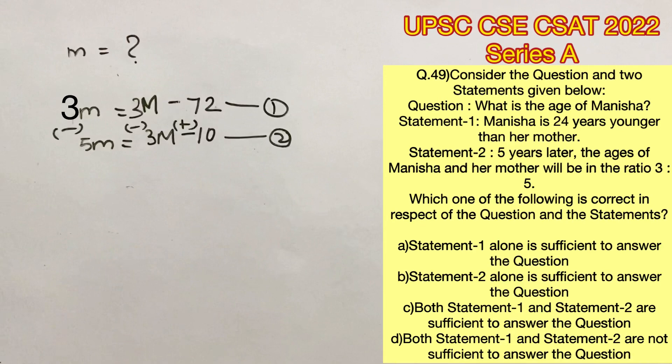Now let's solve these two equations. We get minus 2 small m is equal to minus 62. So m will be equal to 31. Therefore we have found out the age of Manisha.